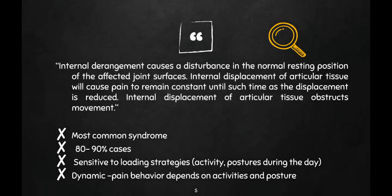Internal derangement causes a disturbance in the normal resting position of the affected joint surfaces. Internal displacement of articular tissue will cause pain to remain constant until the displacement is reduced. Internal displacement of articular tissues also obstructs movement. So according to derangement syndrome, internal displacement of articular tissues causes pain, and as long as the displacement is present, pain will remain constant.